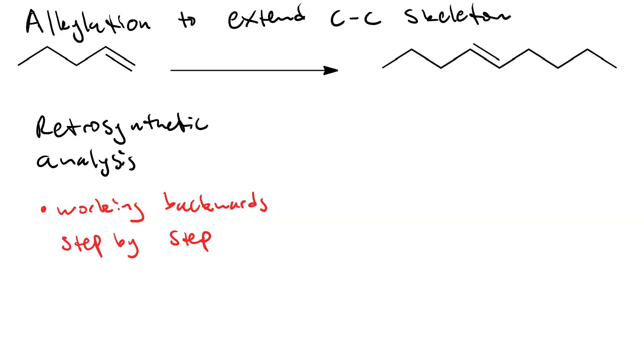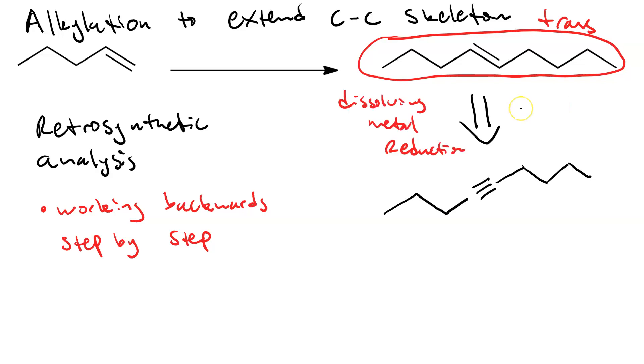Since we know we have to do alkylation, we know we're going to go through an alkyne. So this is the alkyne that has the pi bond in the same position, namely between carbons four and five. Next to this retrosynthetic arrow we need to put in the reagents and conditions that will accomplish this step in the forward direction. Now our final product is a trans alkene. That means we need to use the dissolving metal reduction, and our reagents will be solid sodium in liquid ammonia.